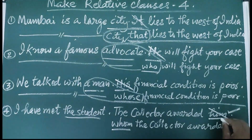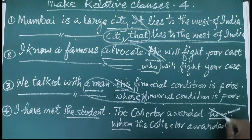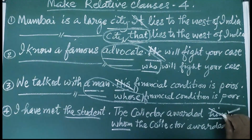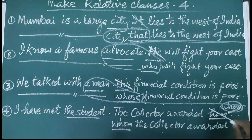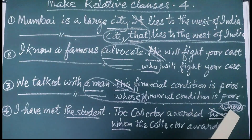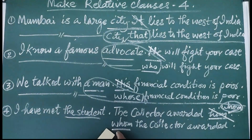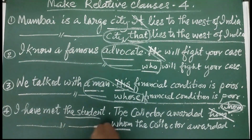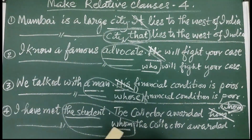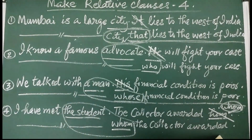Now, the 'him' used here comes after the verb 'awarded', therefore it is considered the object form. In order to replace the object form, we have to use 'whom'. This 'whom' should be placed at the beginning of the relative clause, so that we can establish the relation between the antecedent and the pronoun. So our answer is: I have met the student whom the collector awarded.